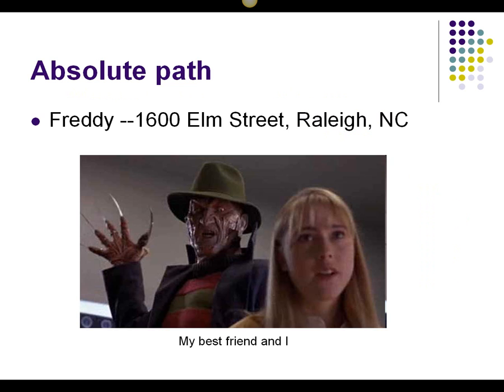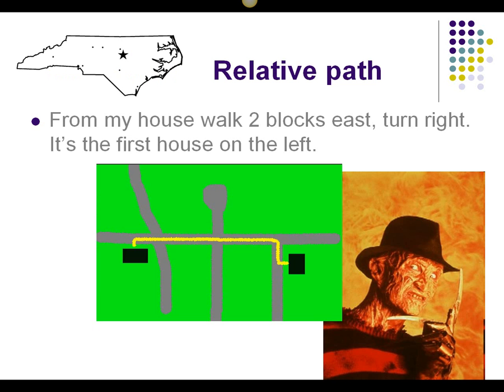Suppose when you were a child you lived in Raleigh and your best friend lived on Elm Street. The absolute path to his house was his postal address. He lived two blocks east of you — this was his relative address.